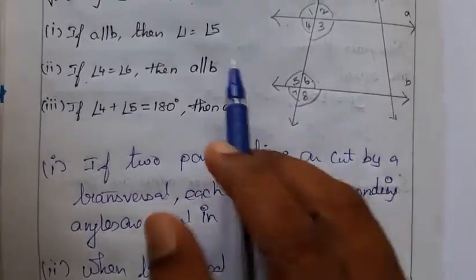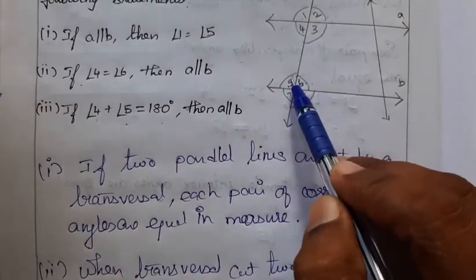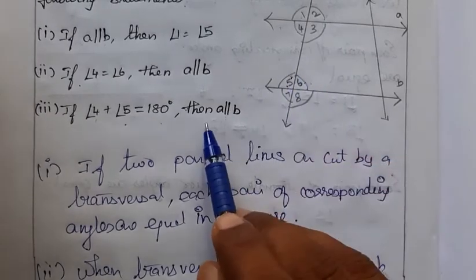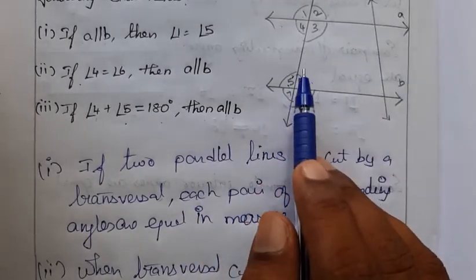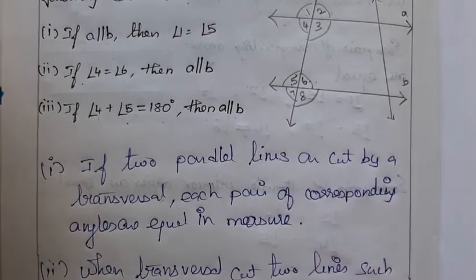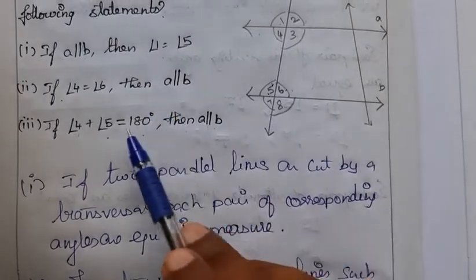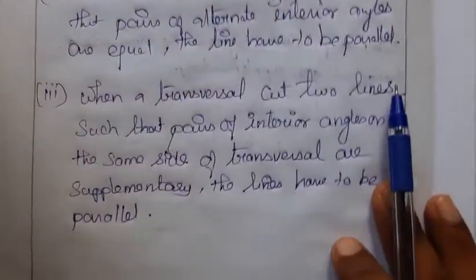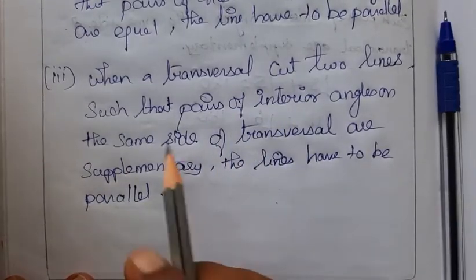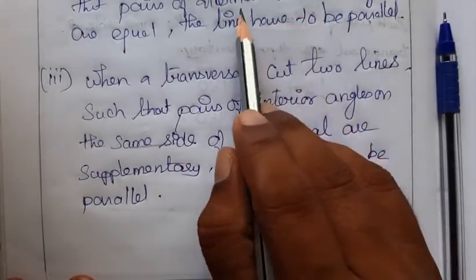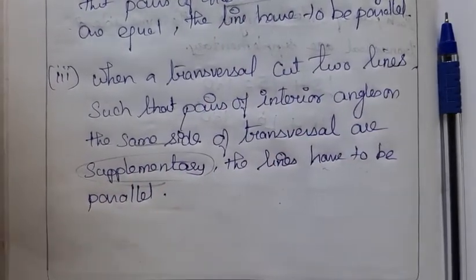Third: if angle 4 plus angle 5 equals 180 degrees, then A is parallel to B. Angles 4 and 5 are interior angles on the same side — this is the co-interior condition. When a transversal cuts two lines such that interior angles on the same side of the transversal are supplementary, the lines must be parallel.